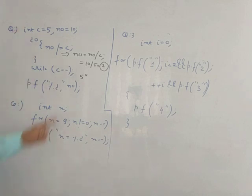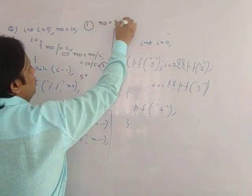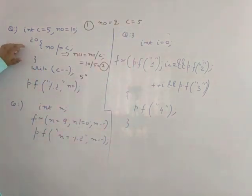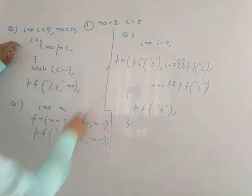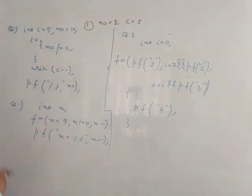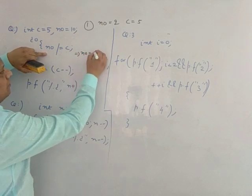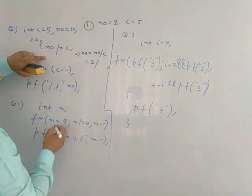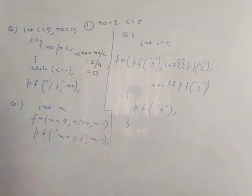The first time the value of num printed is 2. Now the loop runs again. The value of c has become 4 and the value of num is 2. So num = num / c, which is 2 divided by 4. Because of the post-decrement c-- the value of c is now 4, and 2 divided by 4 is 0.